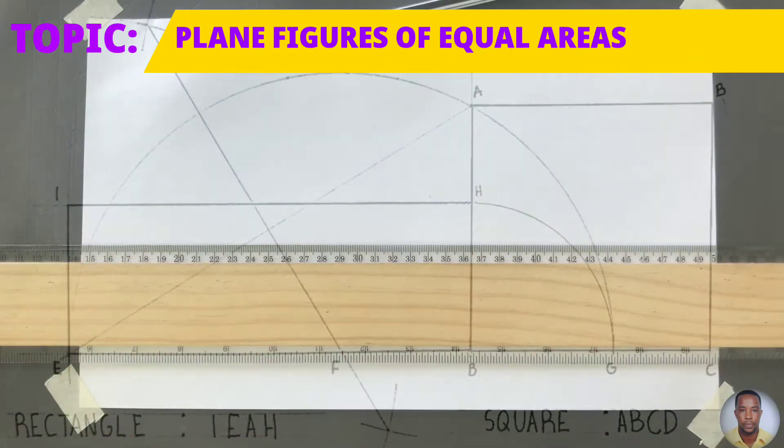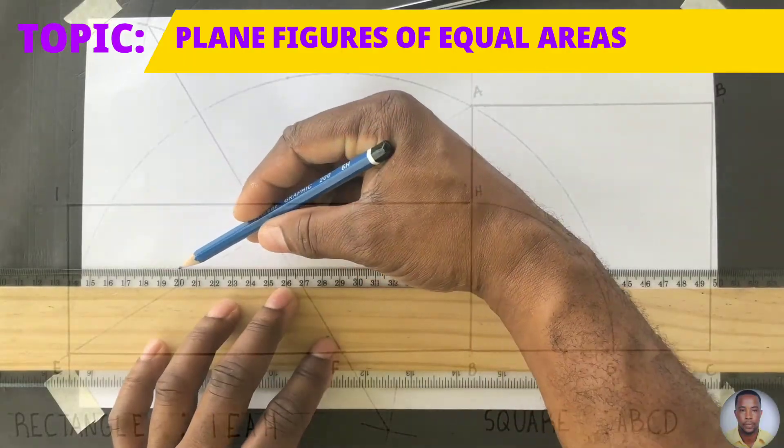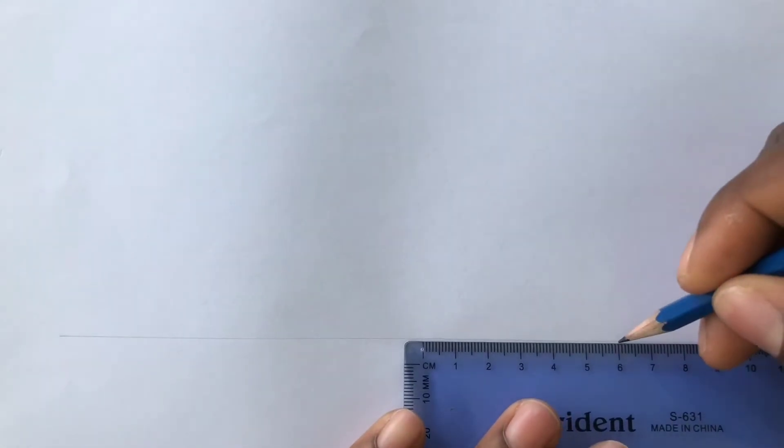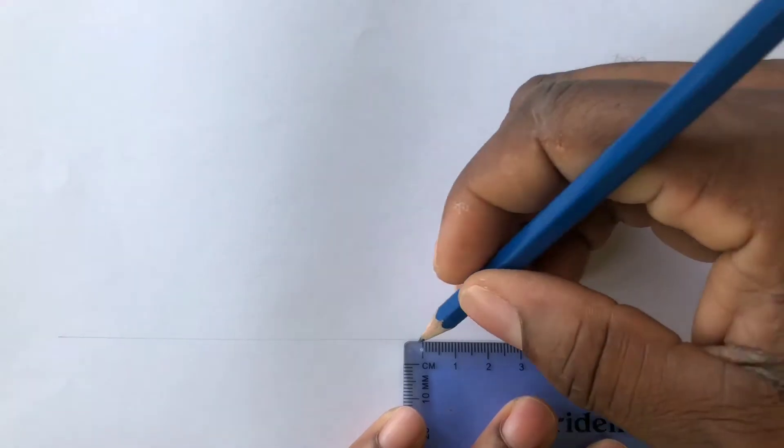We will first draw a horizontal construction line using our T-square. Next, identify 60 millimeters on this line. Label these points B and C.